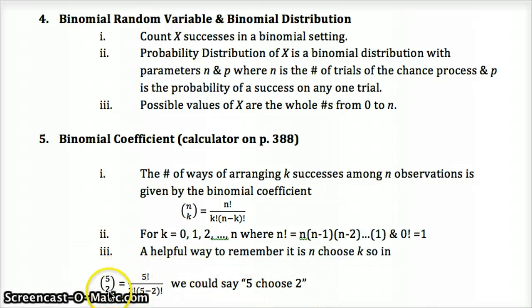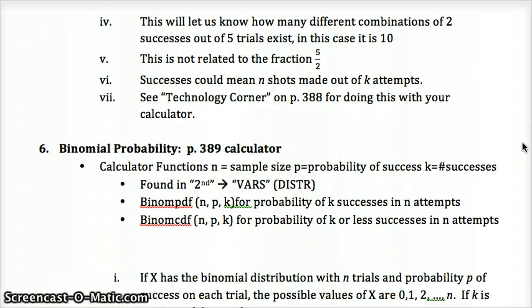So 5 choose 2 here. That would tell us the number of ways we can arrange two successes out of five trials. So the number of ways we could get two heads out of five trials: heads, heads, and three tails, heads, tails, tails, and so on. Rather than writing them all out, especially for more complicated concepts, this formula gives us the result, the number of ways that that outcome, two successes, meaning two heads, could occur in five trials. So it's not related to the fraction 5 over 2. It's a number of ways of two successes out of five trials. It could be K shots made out of N attempts.